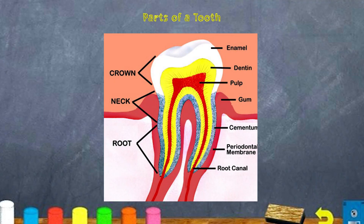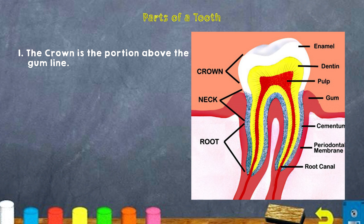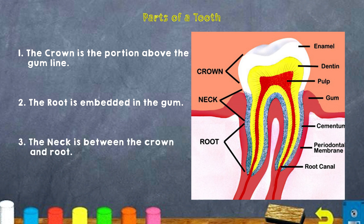What are the different parts of a tooth? Here you can take a look at the image of a tooth. There are three parts to every tooth: the crown, the neck, and the root. The crown is the portion above the gum line. The root is embedded in the gum, and the neck is between the crown and the root.